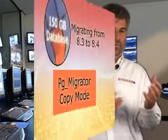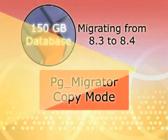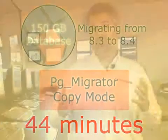Then he tried pg_migrator. pg_migrator has two modes. He first tried it in copy mode. Copy mode is typically what you'd use when you're testing, and it basically copies the files from the old server to the new server. When he used copy mode with pg_migrator, it took 44 minutes — certainly much better than the original 300 minutes with a traditional dump and reload.